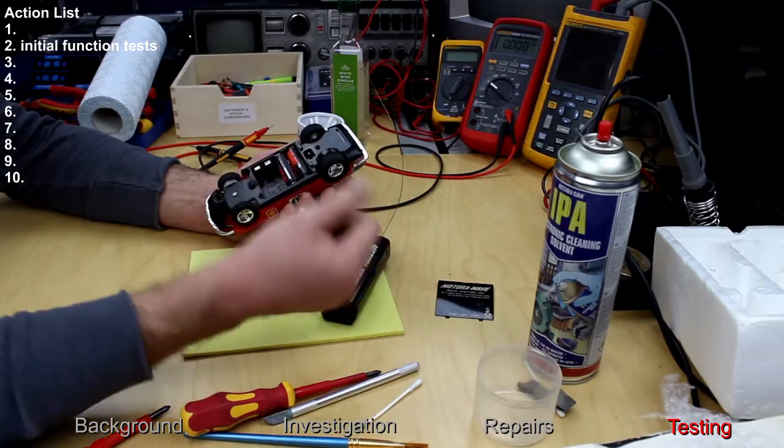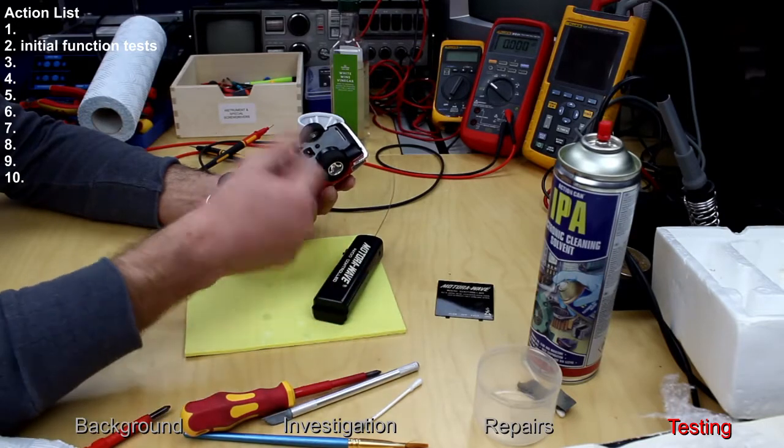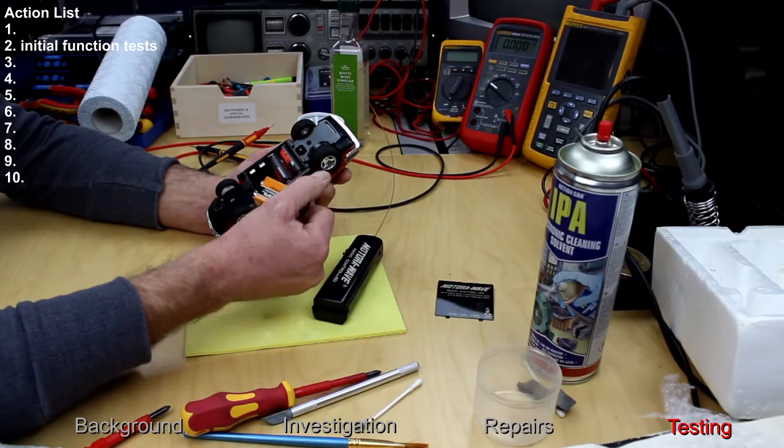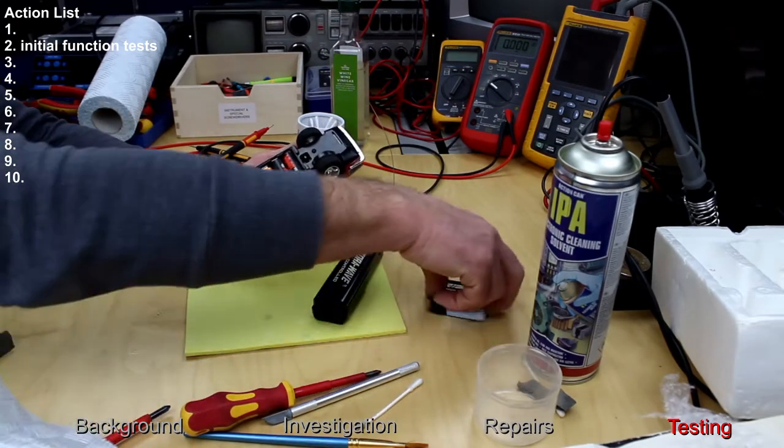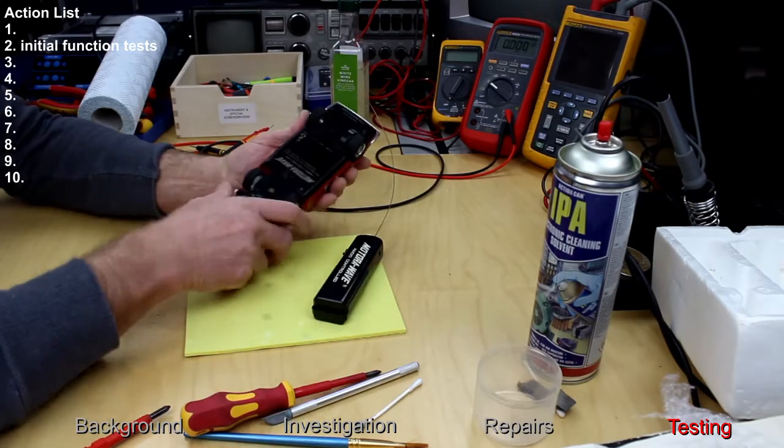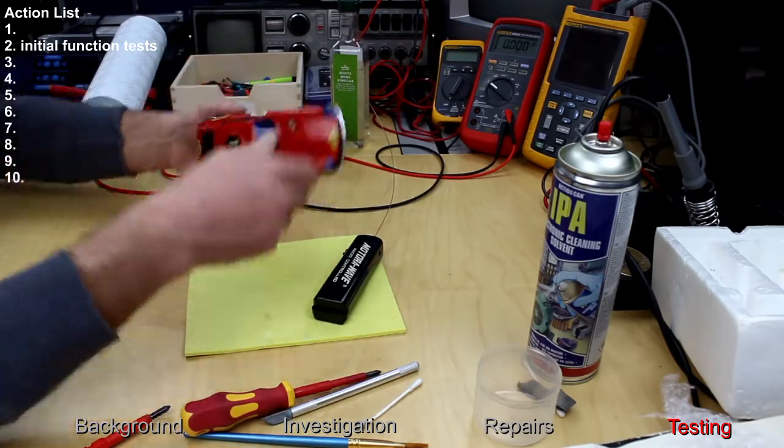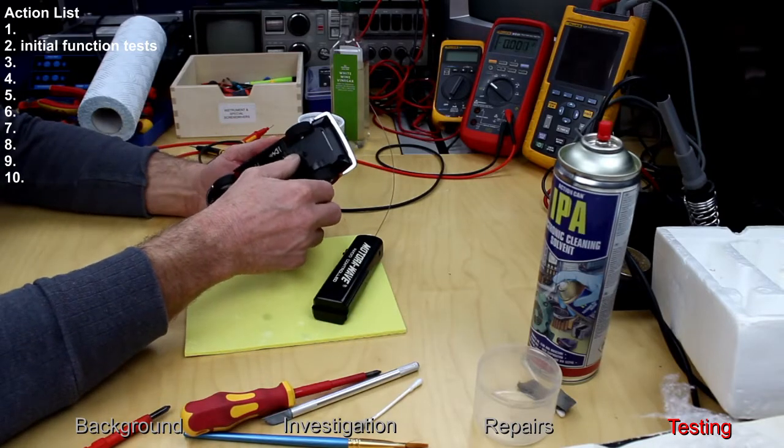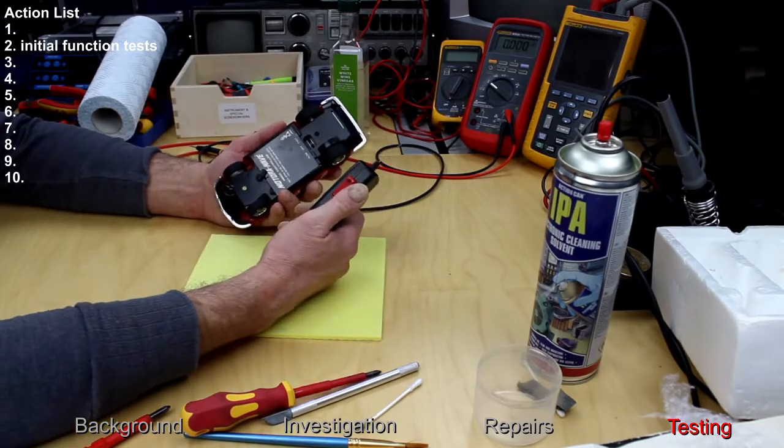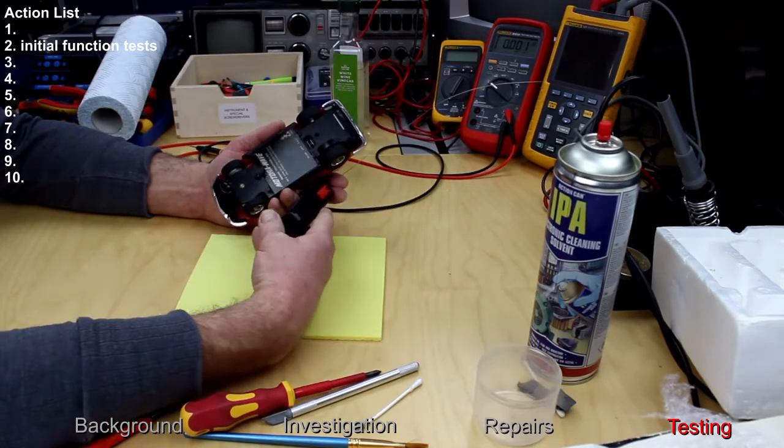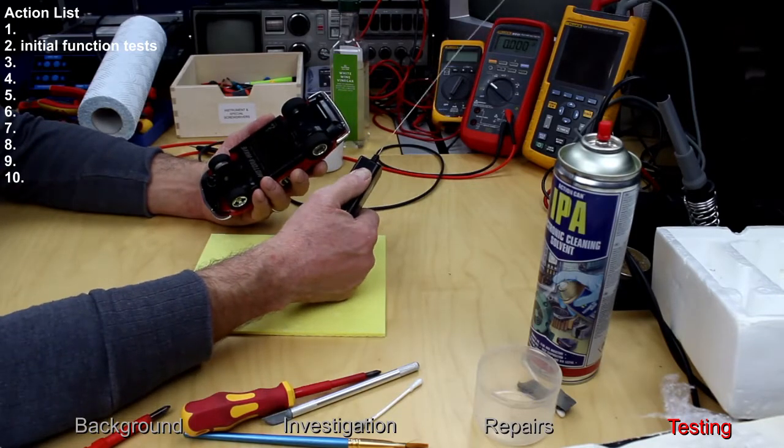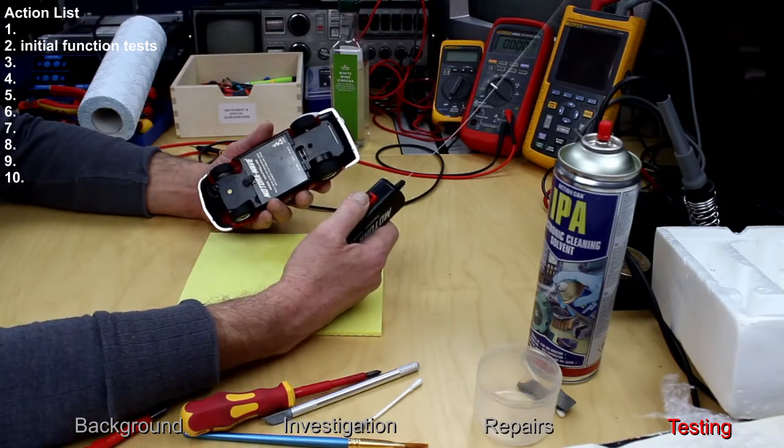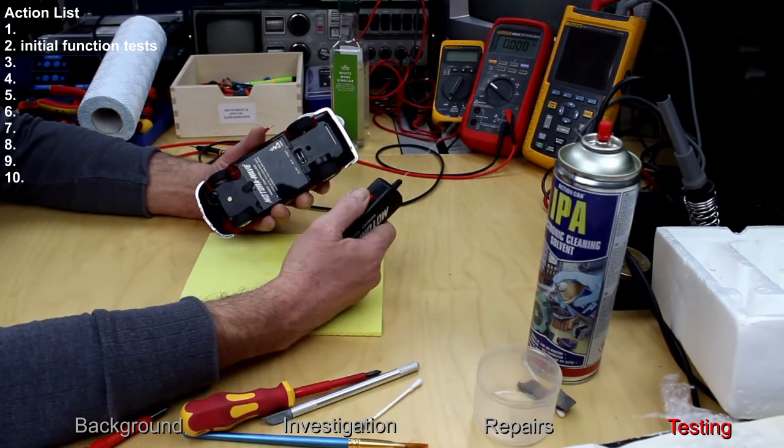So it could be an issue with either the transmitter itself or the receiver electronics. Okay, batteries are in. Switch it on. Slow. When I press the transmit button nothing happens.